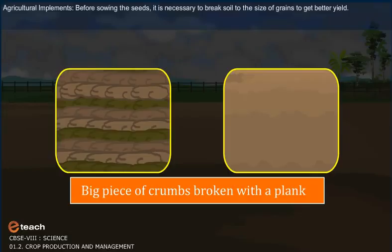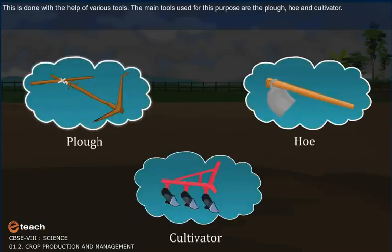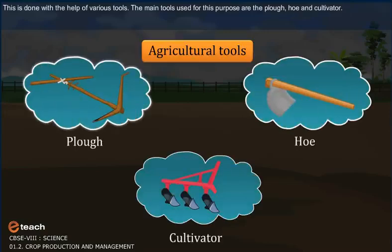Agricultural implements. Before sowing the seed, it is necessary to break the soil to the size of grains to get better yield. This is done with the help of various tools. The main tools used for this purpose are the plough, hoe and cultivator.